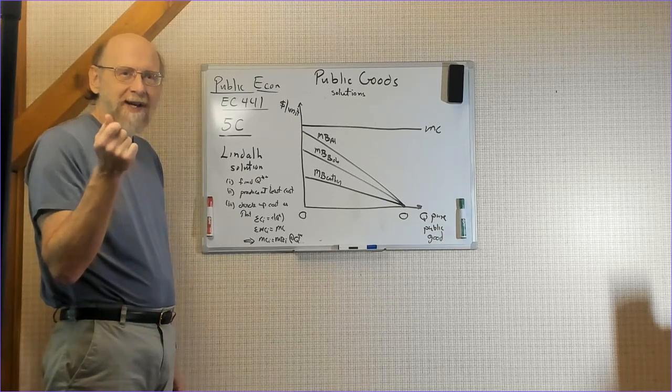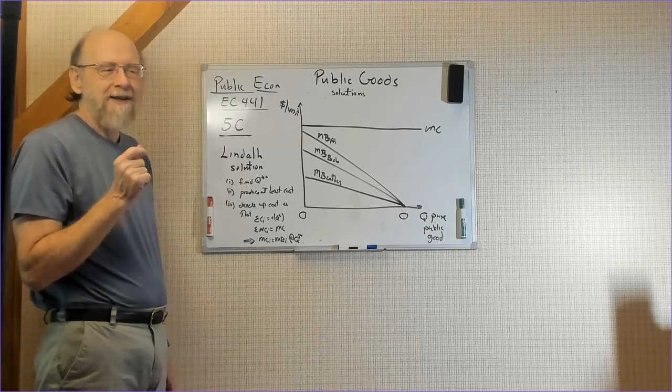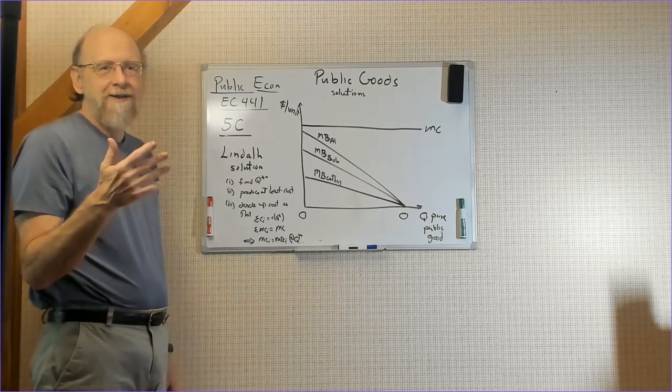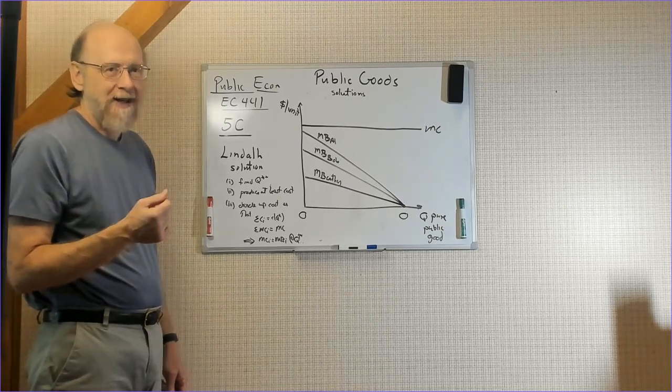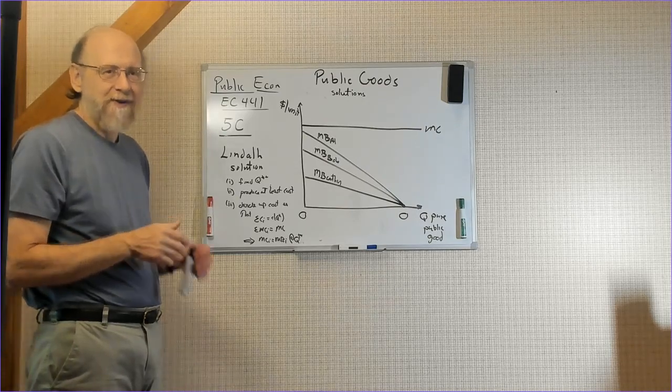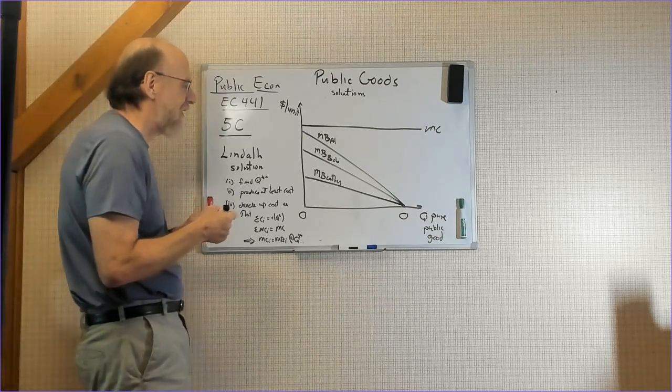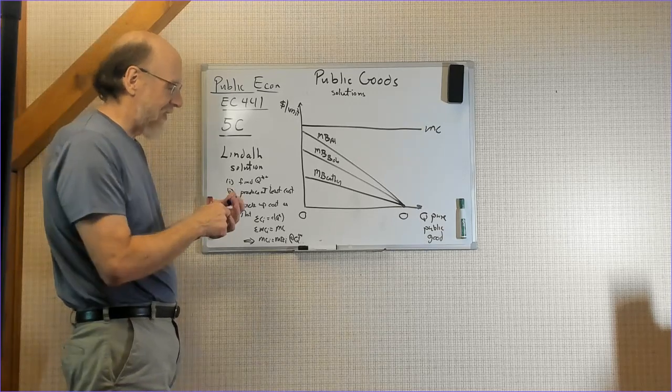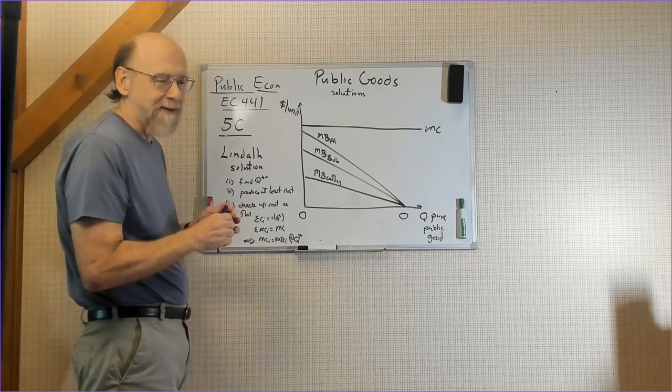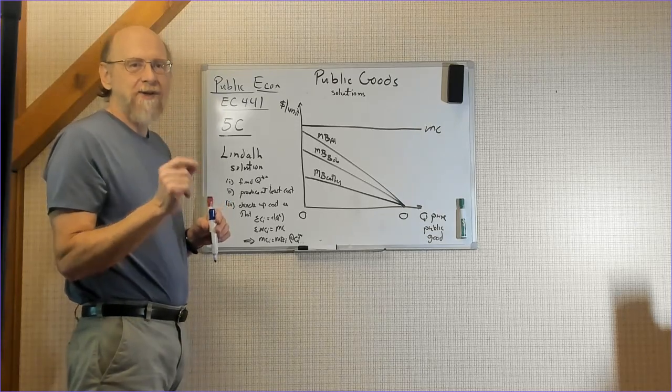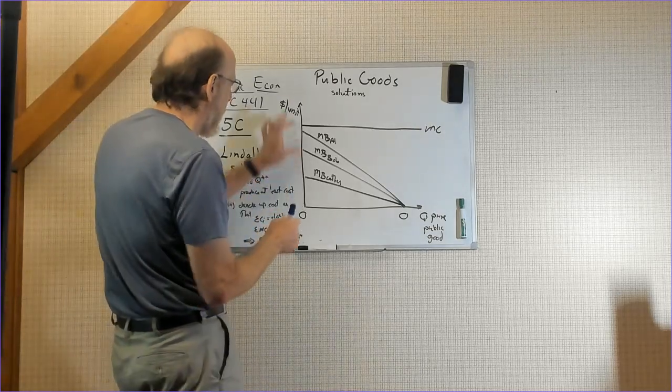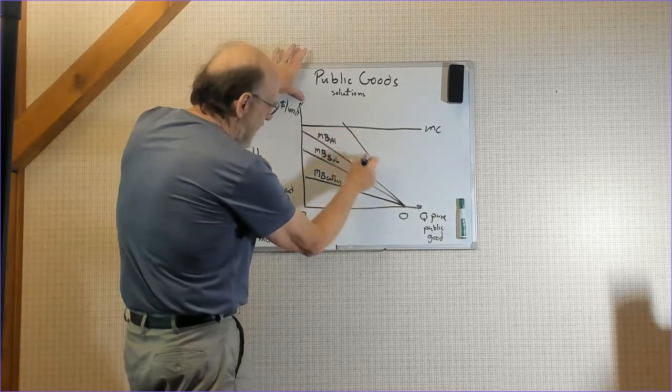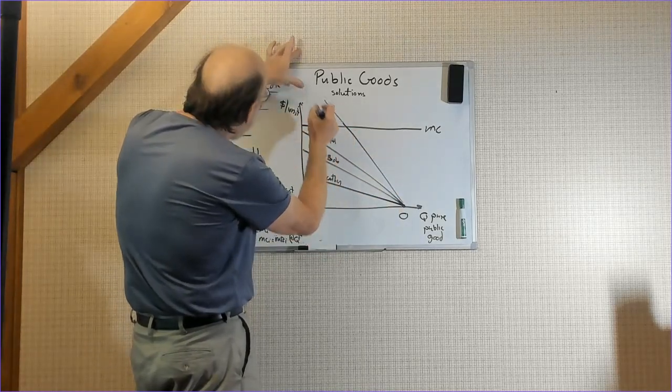It turns out that this is a type of tax system, cost-sharing system, that tends to generate unanimous agreement. But of course, they have to accept this tax rule for that to be true. So the first step, you find Q double star by adding up the individual marginal benefit curves to determine the social marginal benefit curve. Since I'm doing roughly the same geometry each time, I'm going to get roughly the same curve.